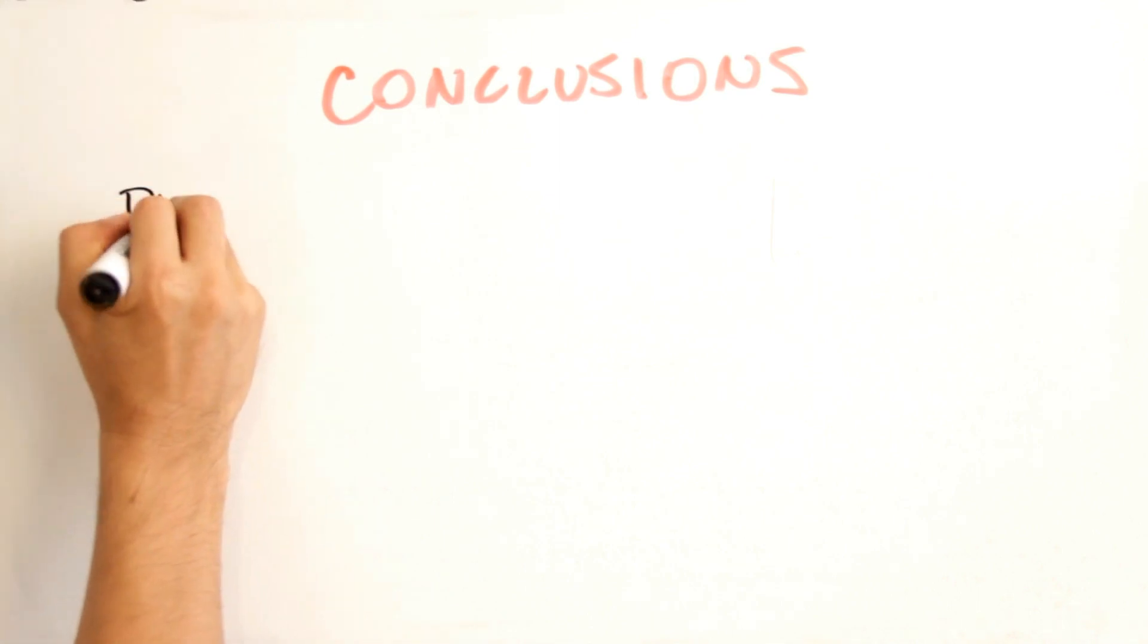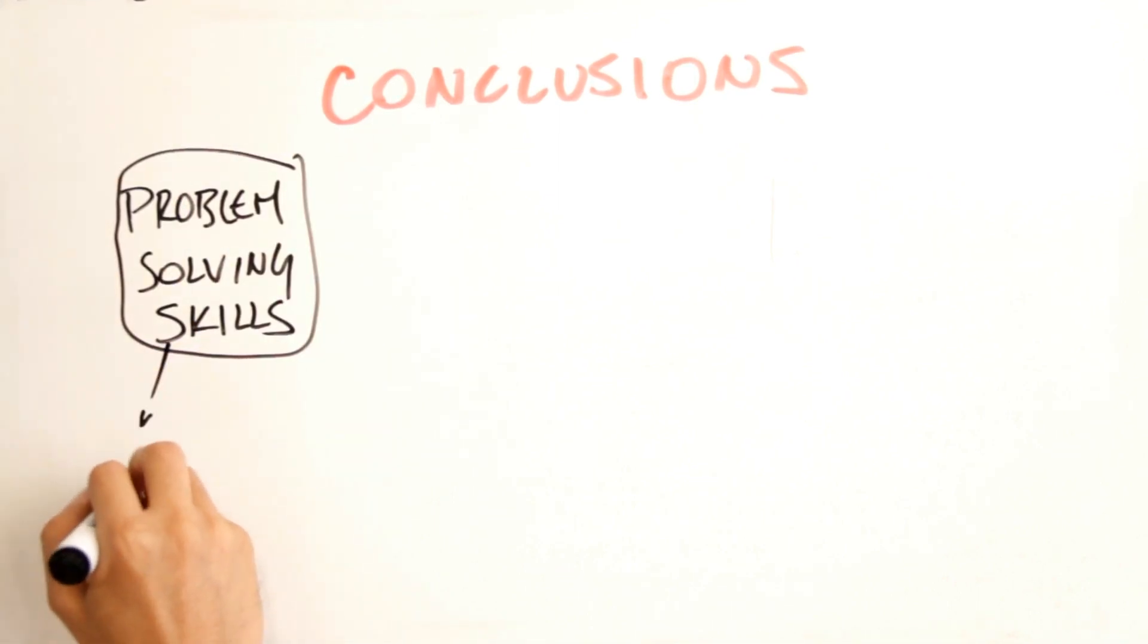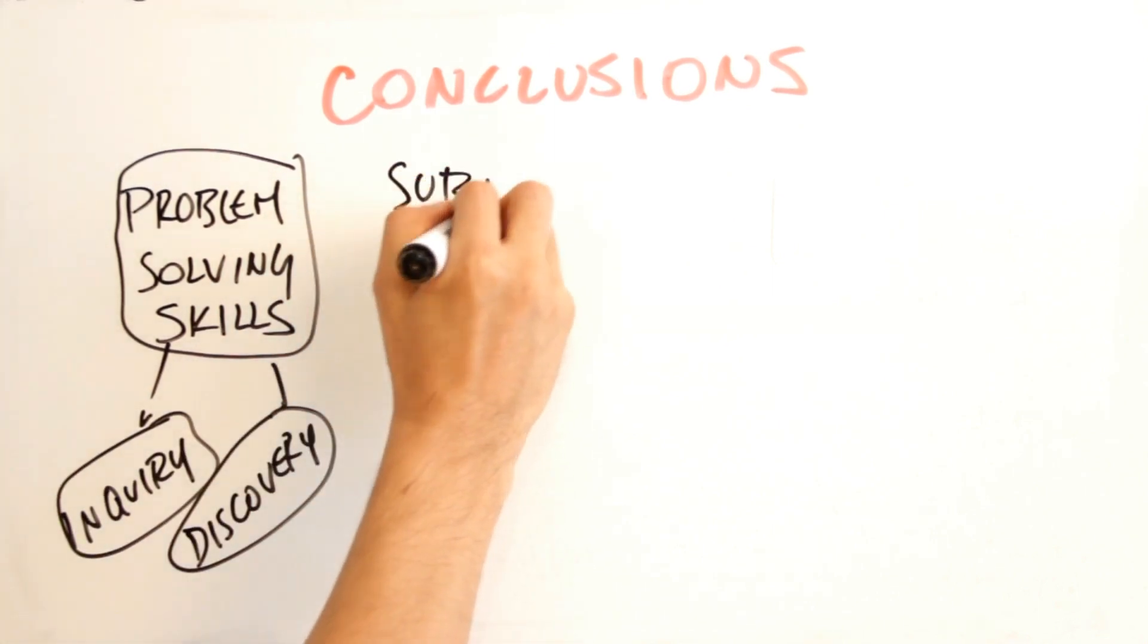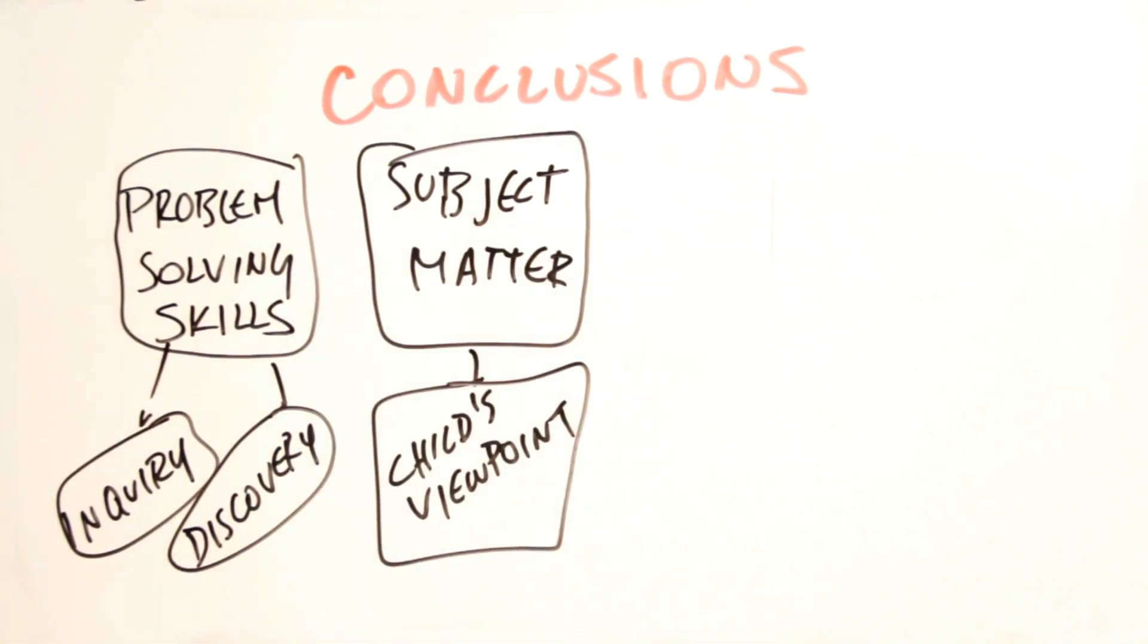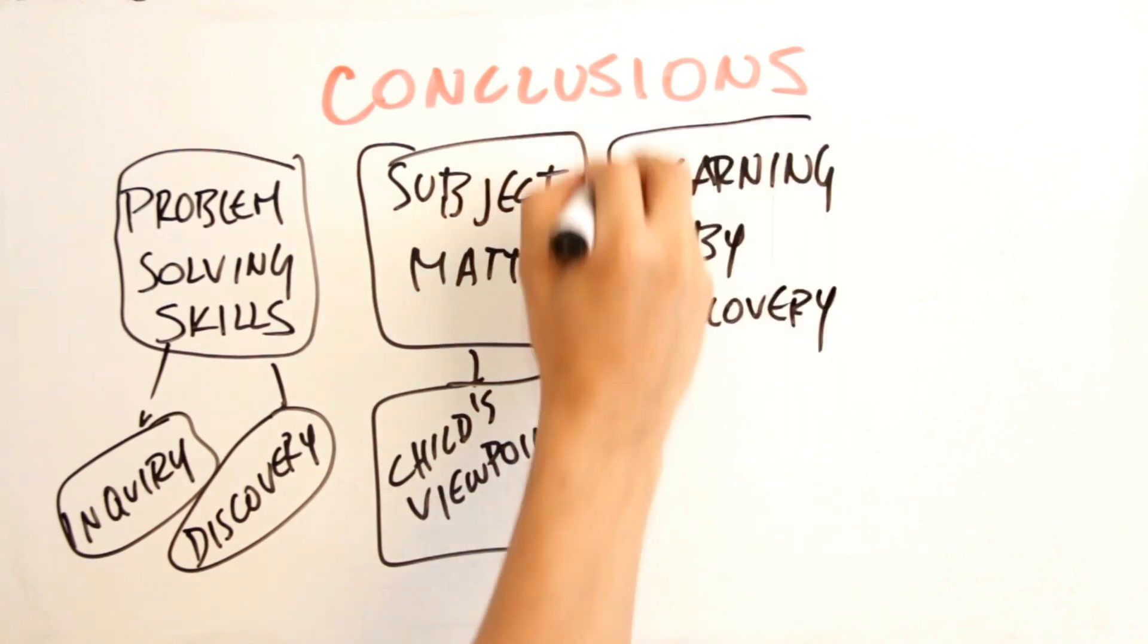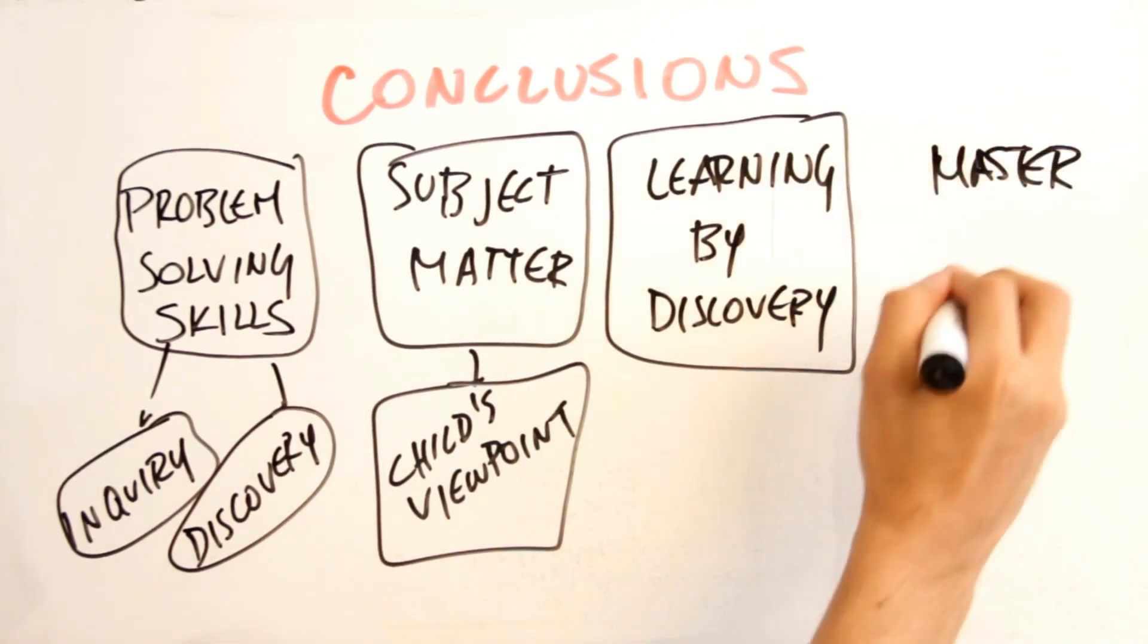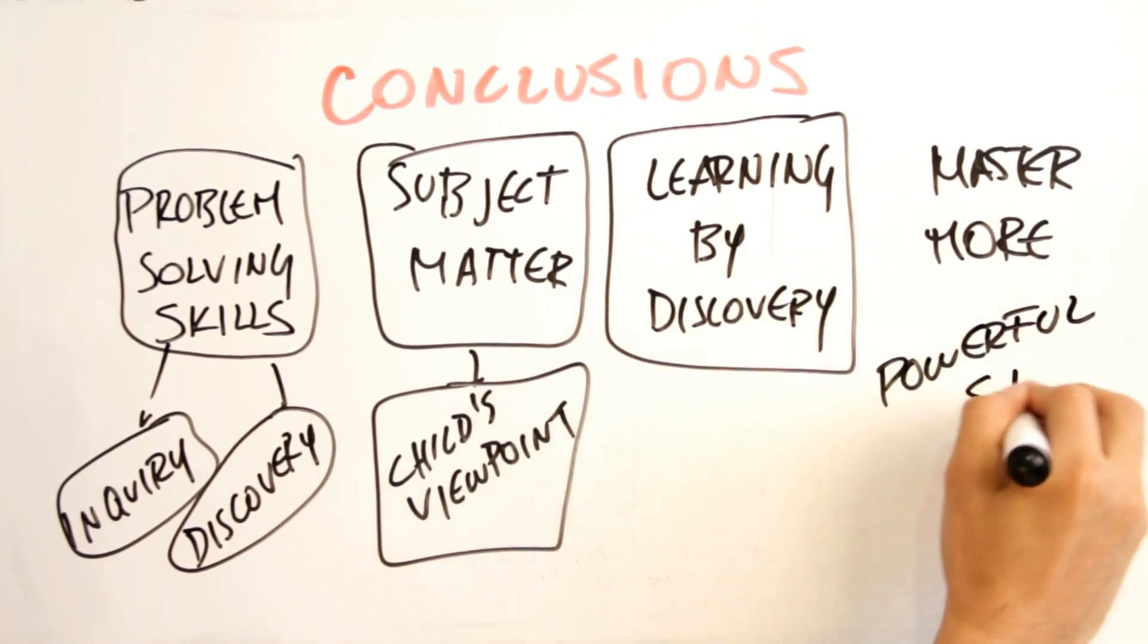Bruner believed that curriculum should foster the development of problem solving skills through the processes of inquiry and discovery. He also believed that subject matter should be represented in terms of the child's way of viewing the world. He advocated teaching by organizing concepts and learning by discovery. And finally, the curriculum should be designed so that the mastery of skills lead to the mastery of still more powerful skills.